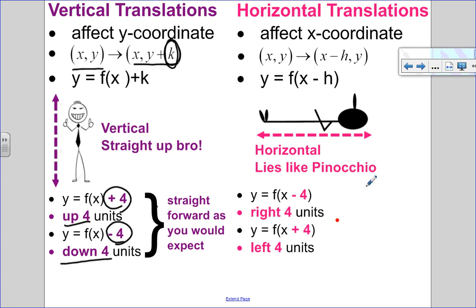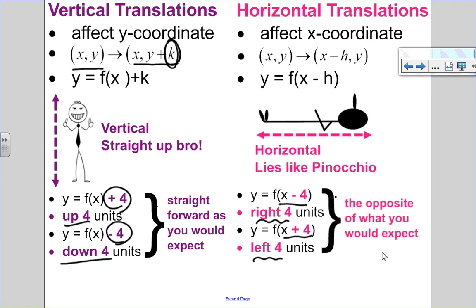Now let's compare that to a horizontal translation. Horizontal translations affect the x-coordinate because I'm going left to right. I want you to remember that horizontal lies like Pinocchio — lying down, but also not telling the truth. The reason is that horizontal is not exactly what it seems. If I have x minus four, you'd think I'm going four units to the left, but I'm actually going right four units. And x plus four actually means going left four units. If you'd like to see a video on why horizontal is opposite to what it appears in the equation, I'll have a link in my video description.